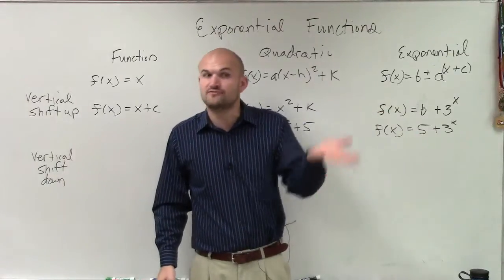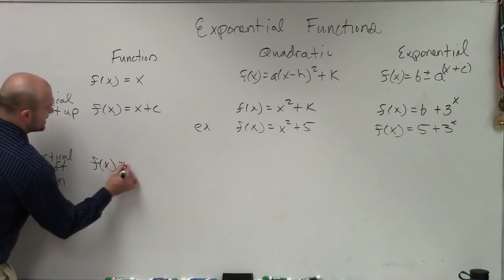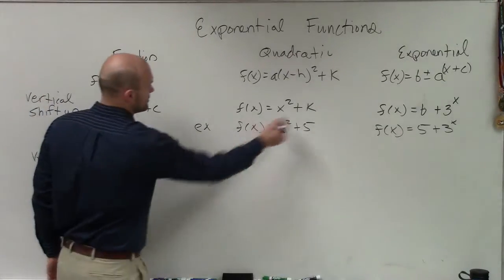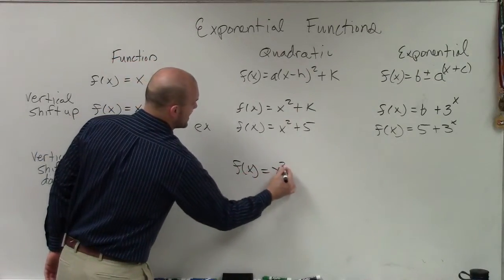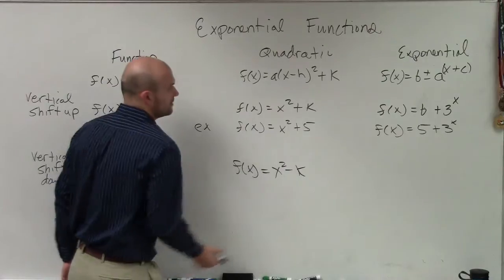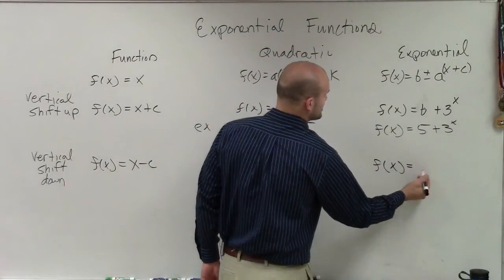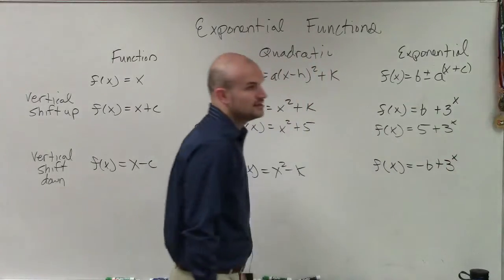Then if I'm going to be vertically shifting down, that'll be f of x equals x minus c. So therefore in a quadratic you'd say f of x equals x squared minus k. For an exponential it would be f of x equals negative b plus 3 to the x.